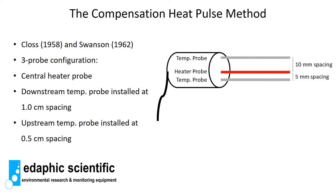The next method is called the compensation heat pulse method. It is slightly more complex because it uses a three-probe configuration — a heater probe, a downstream temperature probe, and a second temperature probe upstream of the heater. The spacing is also different: the distance between the heater and the downstream temperature probe is 10 millimeters, and the distance between the heater and the upstream temperature probe is 5 millimeters.